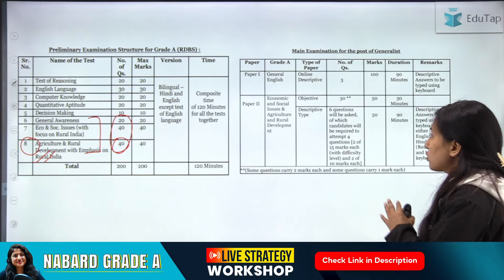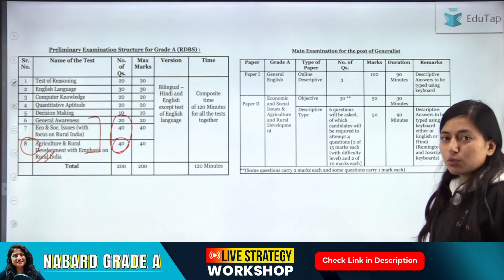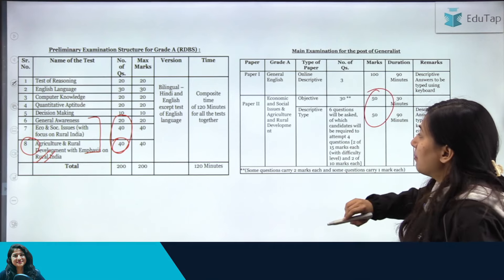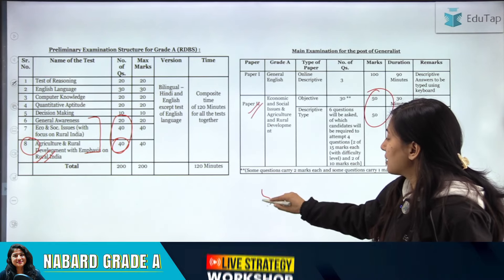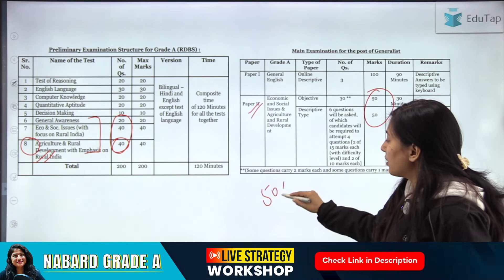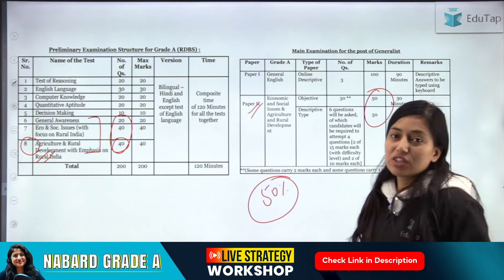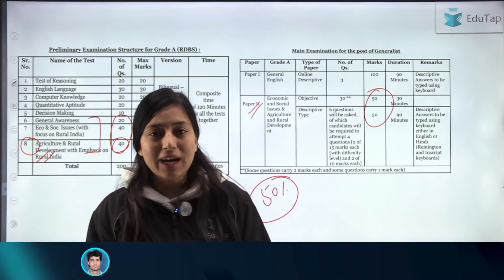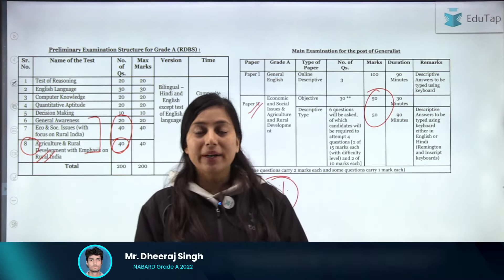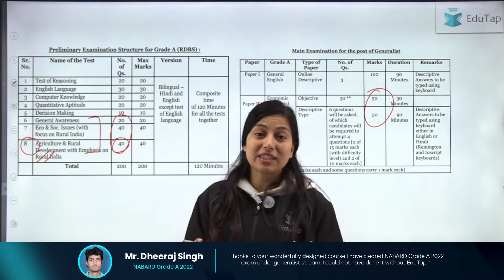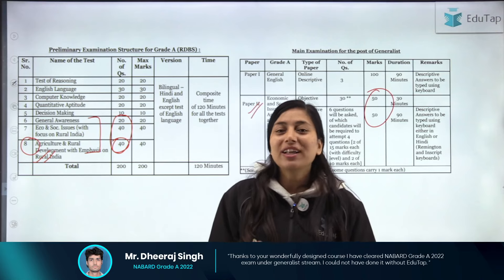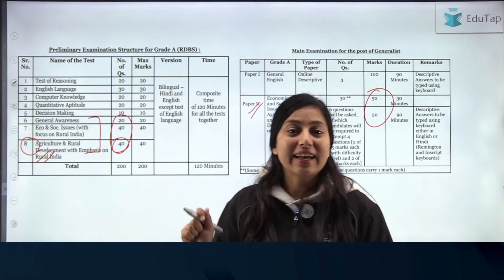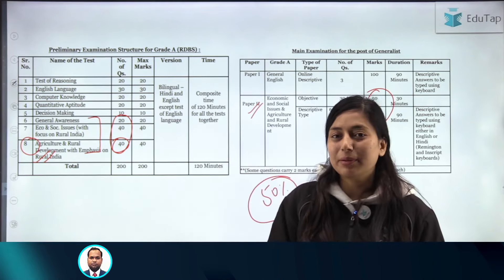Talking about Phase 2 — if you apply for the generalist post, then out of 100 marks in Paper 2, 50% marks are from ARD. So you cannot avoid agriculture. Let's see how you can decode this Agriculture and Rural Development subject.